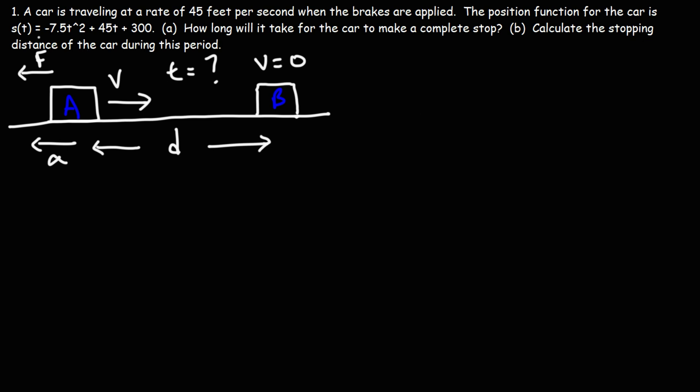Well, right now, we're given the position function. We need to find the velocity function and set it equal to zero and then solve for T. The instantaneous velocity function can be calculated by taking the derivative of the position function.